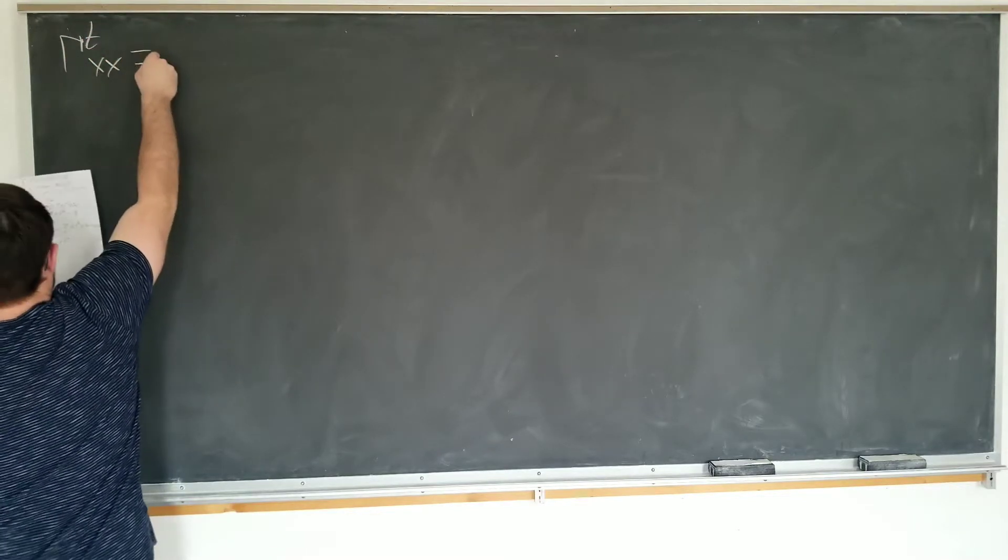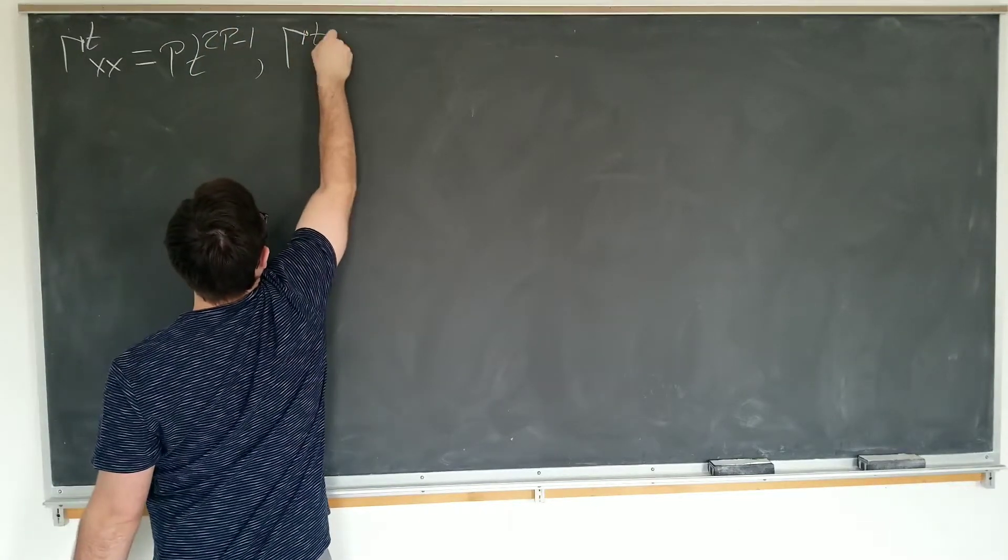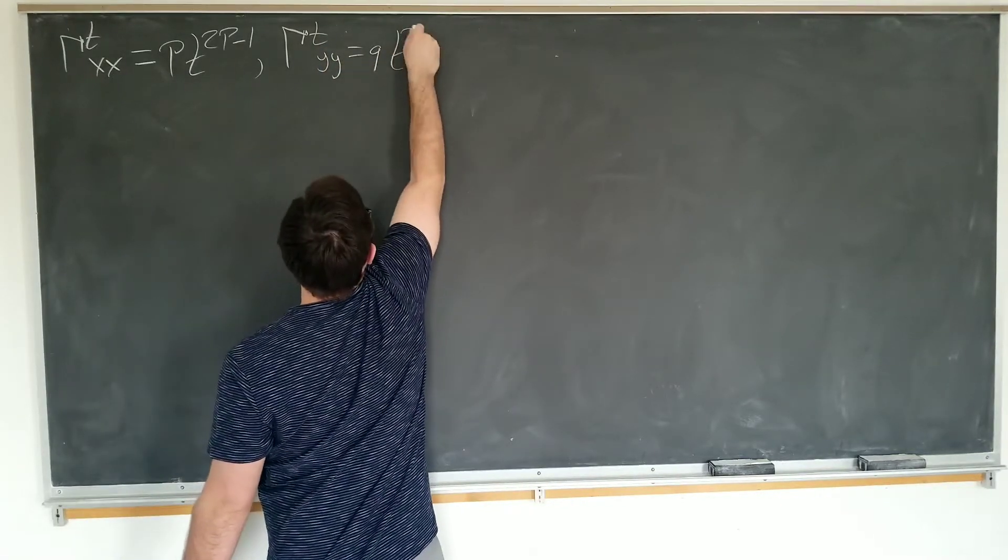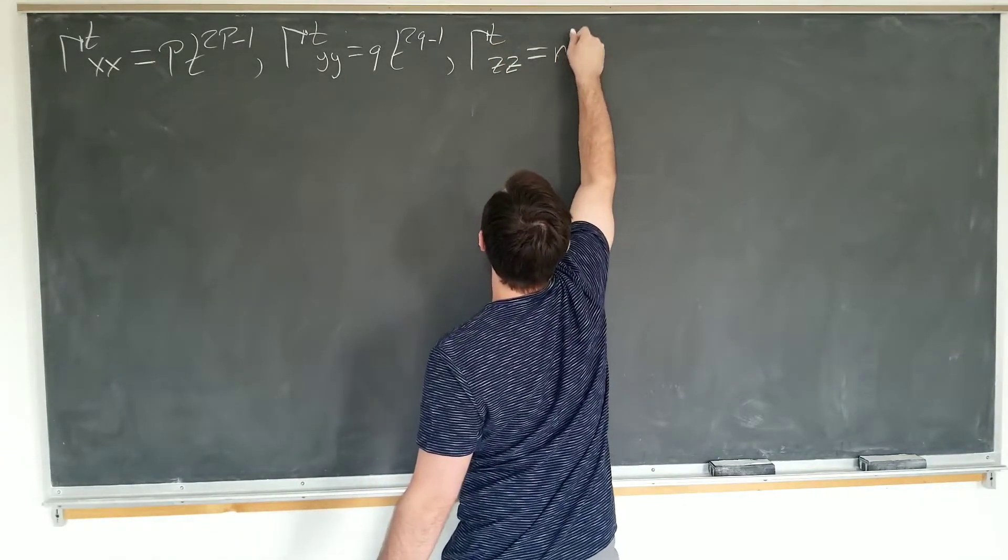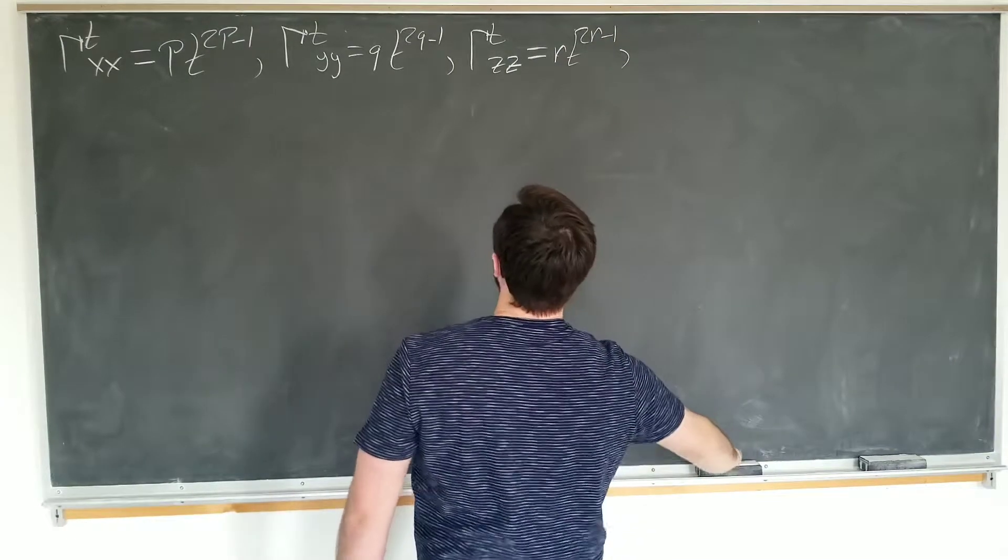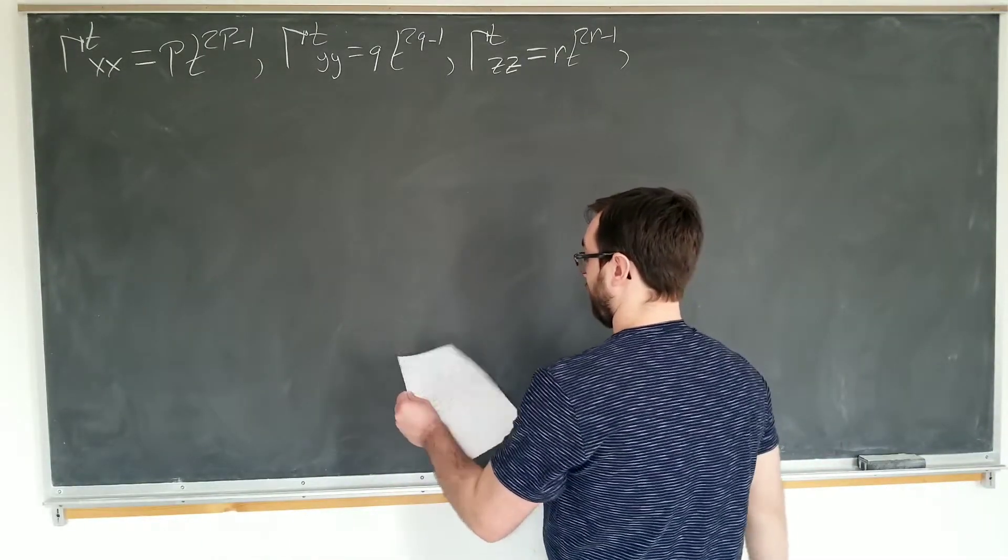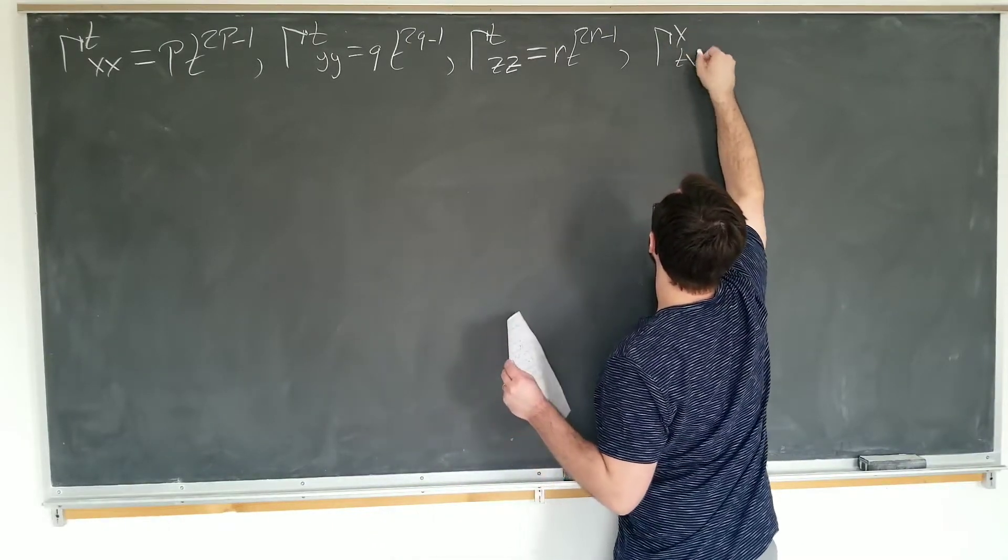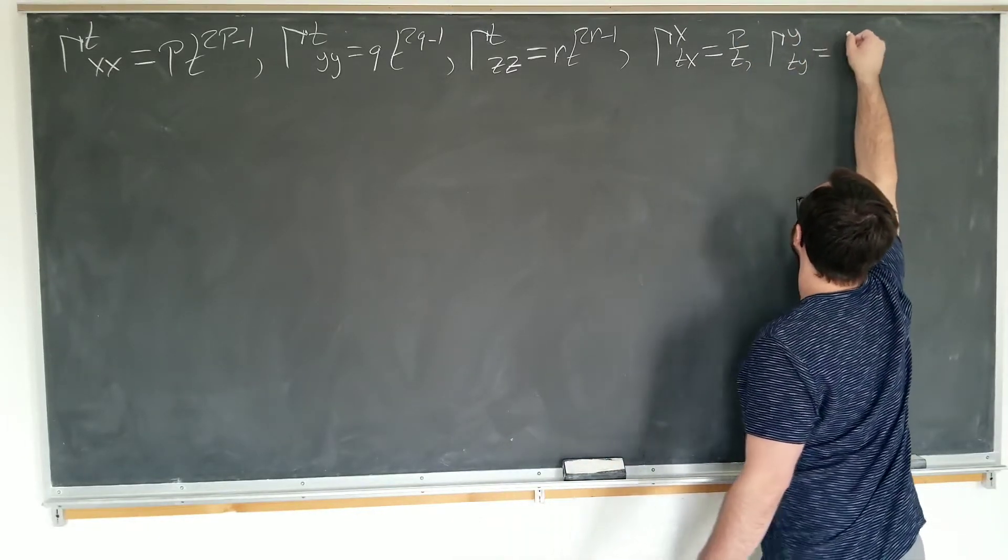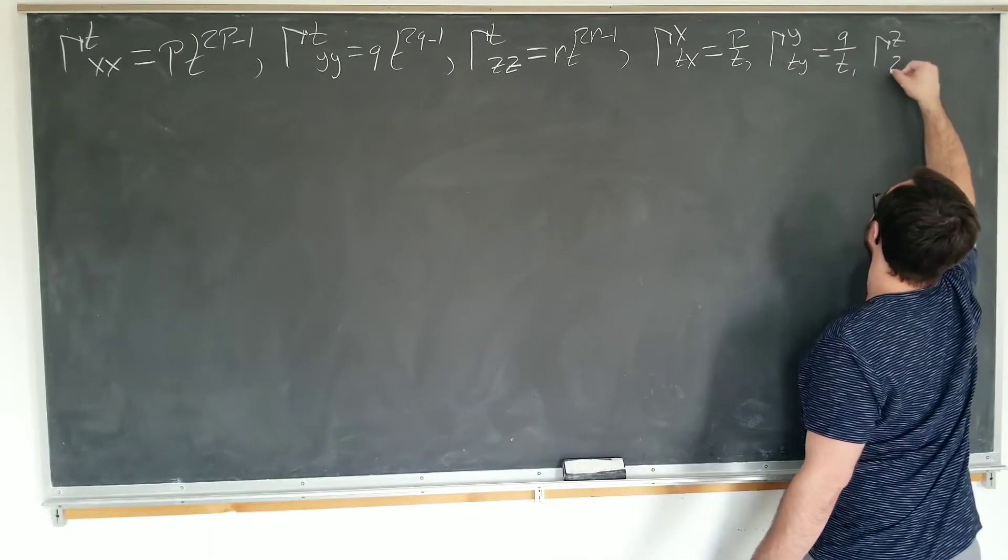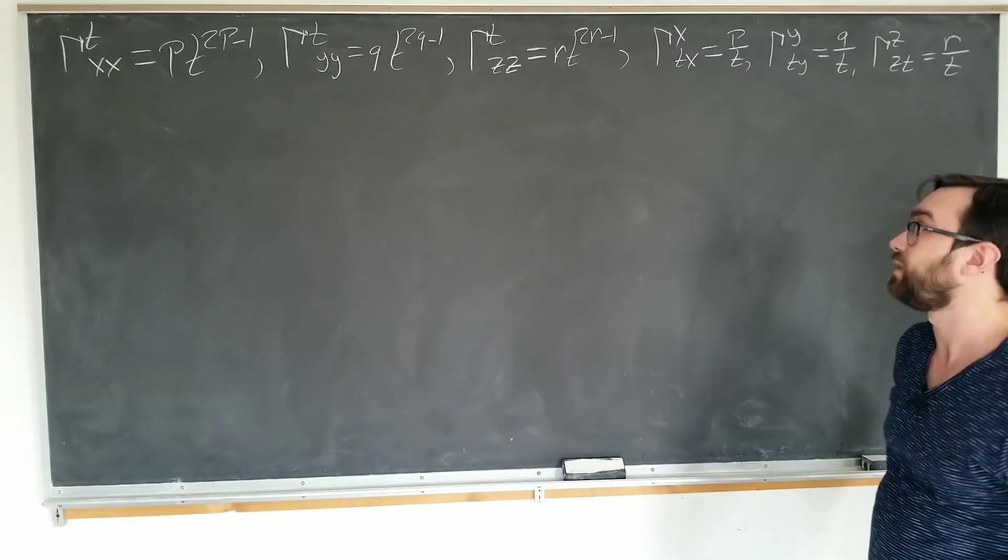Gamma of T_XX is equal to P*T^(2P-1). Gamma of T_YY is Q*T^(2Q-1). Gamma of T_ZZ is equal to R*T^(2R-1) for our first family. The second family is a simpler one indexed by following. We have gamma of X_TX equals P over T. Gamma of Y_TY equals Q over T. Gamma of Z_TZ equals R over T.